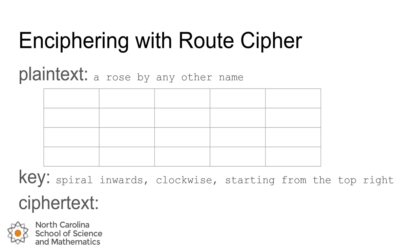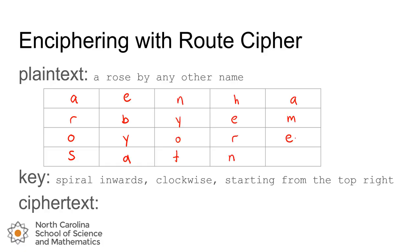If you can't get a grid to nicely fit your message, you can always add junk characters like the letter x to fill it out, since the person deciphering the message will know they're just filler. You start by writing your plaintext message column by column, working from left to right. For our message we would start with the letter a in the top left and then moving down r, o, s, up to the top of the next column e, b, and so on. When you get to the end you can put an x to fill out the grid.